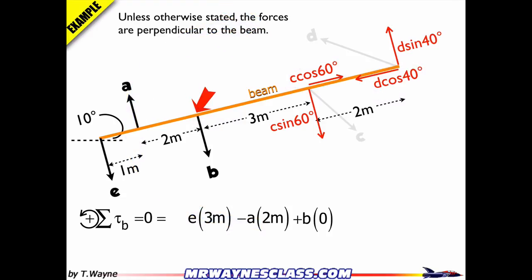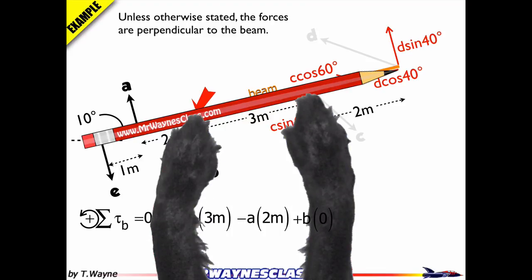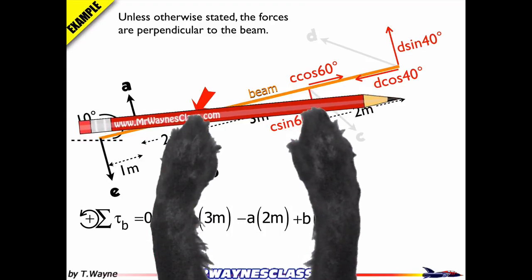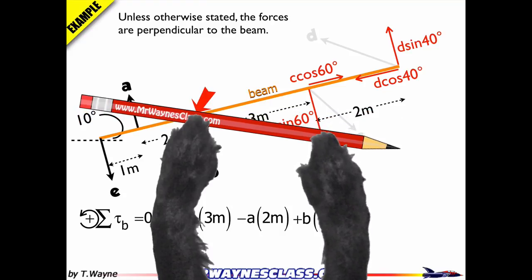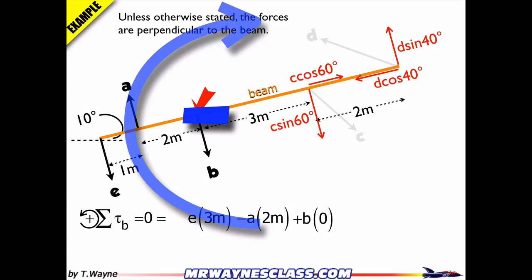So let's talk about C sine 60 and D sine 40. Let's do the pencil test. Here's the pencil, and the dog paw is here at C sine 60. She's going to pull in the direction of C sine 60, and we can see that that's going to be a negative moment or a negative rotation. So that means that my torque when I do the calculation is going to be a negative C sine 60 times the distance, which is three meters.